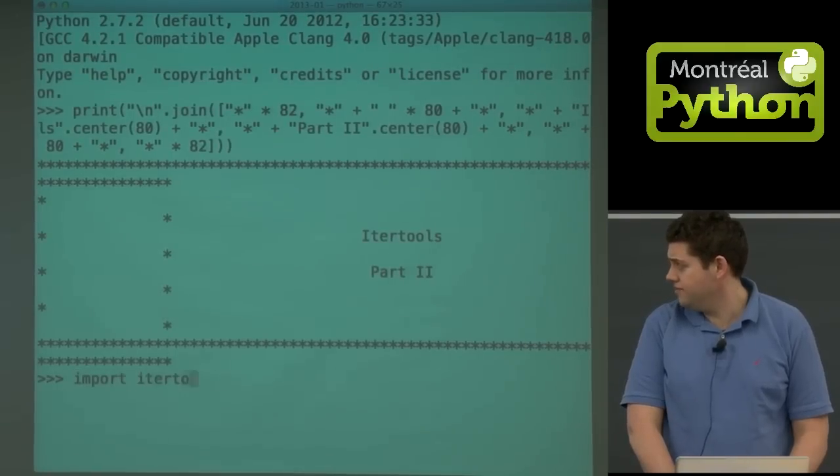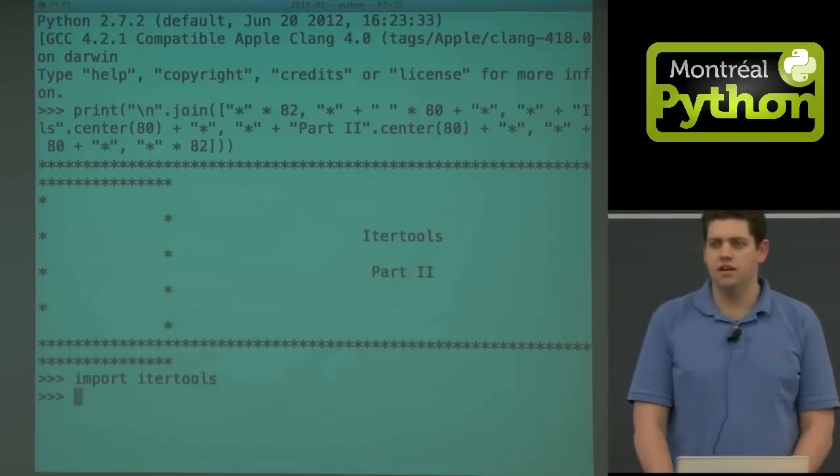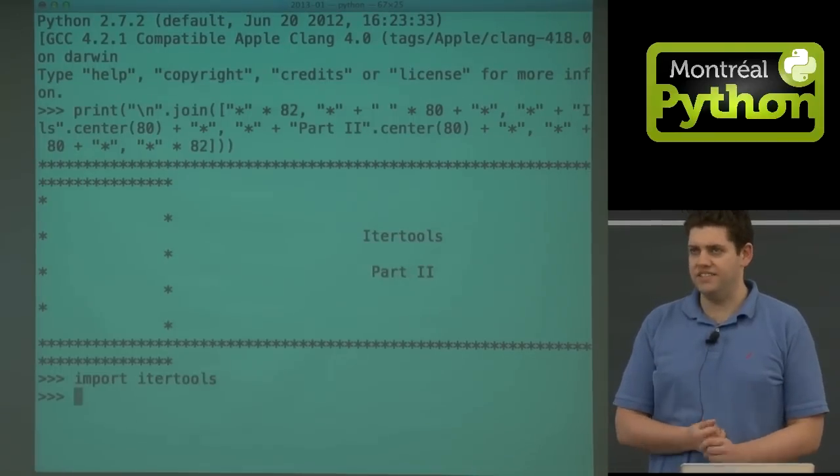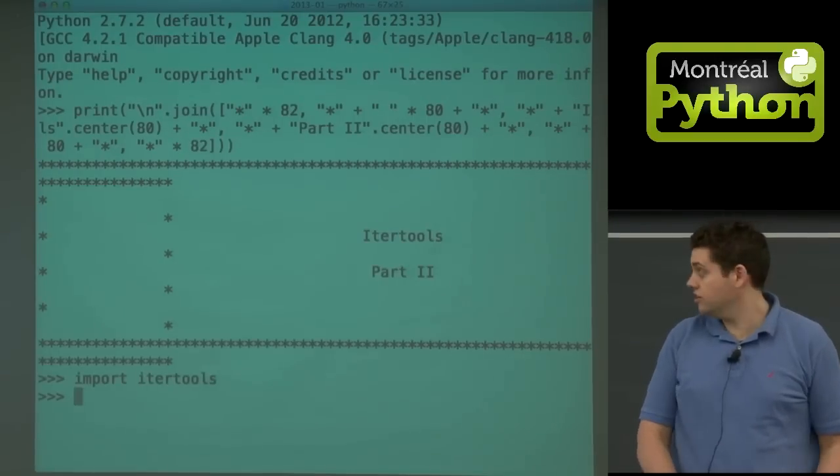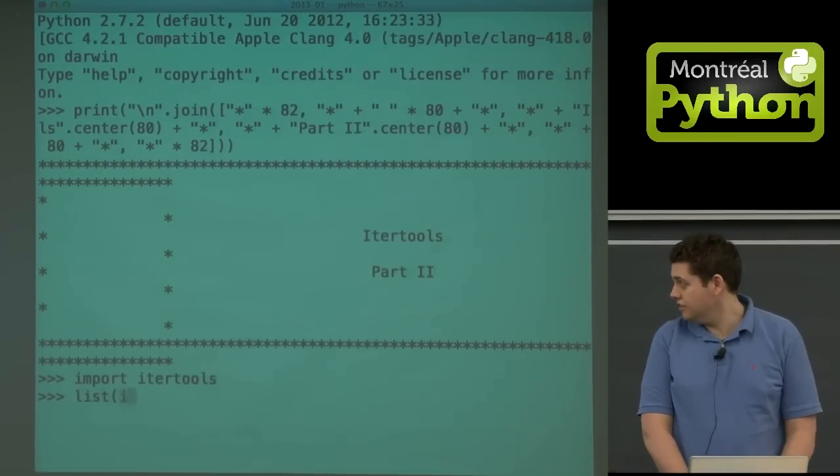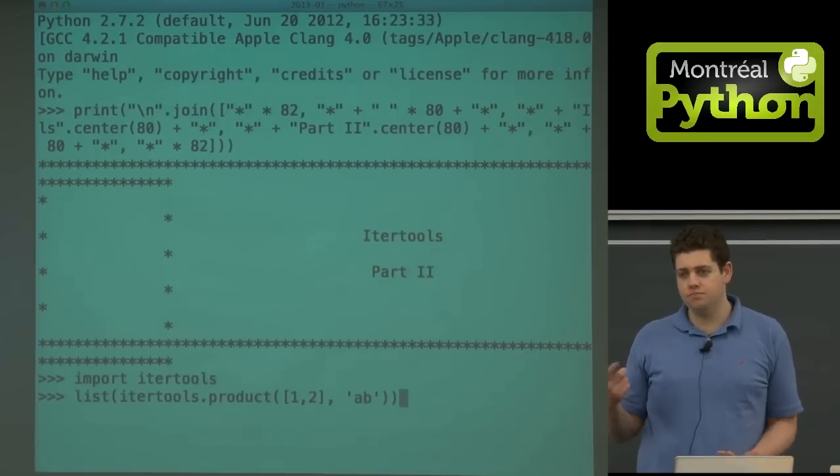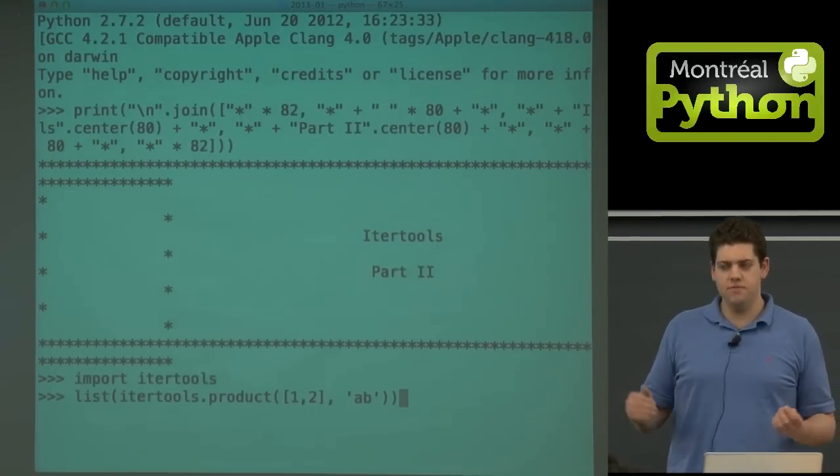Let's start by importing itertools. The first function I want to talk about is combinatoric functions. There's a whole slew of them, all your basic discrete math combinatoric functions, like for example product. So let's say you have a list of two items. Again, itertools always spits out generators so I always throw out a list to show what it does, or else you just get a generator object which is not very impressive.